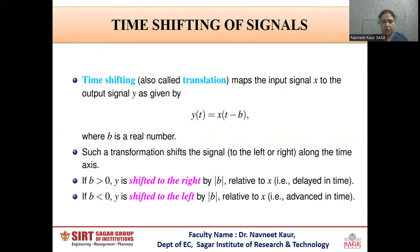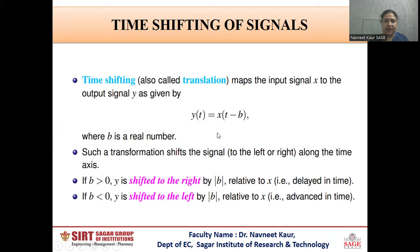The first operation which is normally used in the analysis of a signal is the time shifting of the signal. Time shifting maps the input signal to the output signal given by y(t) = x(t - b). Here, y(t) is the resultant signal obtained after shifting, and it is dependent on the variable time t. x is the original signal which is shifted by a real number b. Such transformations shift the signal either to the left or to the right along the time axis, which depends on the value of b. If b is greater than 0, then y is shifted to the right by magnitude b relative to x. It is also called a time delayed signal.